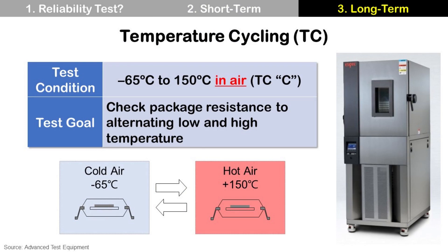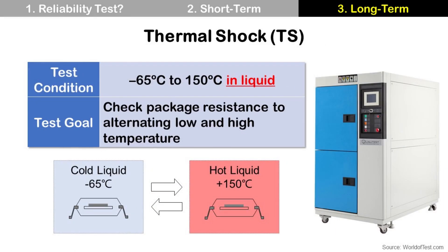Temperature cycling test checks package resistance to alternating low and high temperatures in air. The coefficient of thermal expansion, CTE, is different for each material — for example, die, mold compound, lead frame, or laminate substrate. There is CTE mismatch between these materials when the package is exposed to alternating low and high temperatures. This CTE mismatch causes mechanical stress, then delamination or cracks. Typically, 1000 cycles are used for package qualification. Thermal shock test is very similar to temperature cycling, but it uses liquid instead of air, so temperature change is more rapid and mechanical stress from CTE mismatch is more severe. Thermal shock is a more severe test than temperature cycling, and 1000 cycles are commonly used. Temperature cycling test is more popular than thermal shock test.